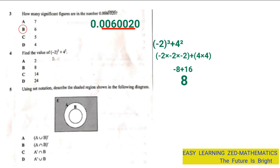So the correct answer to question 4 was B, which is 8. B was the correct answer and the answer was 8.